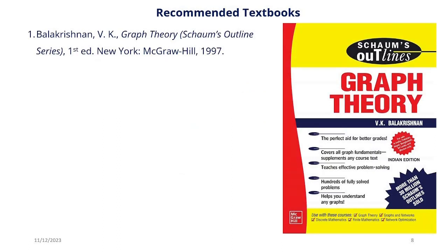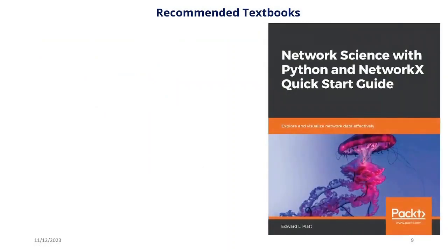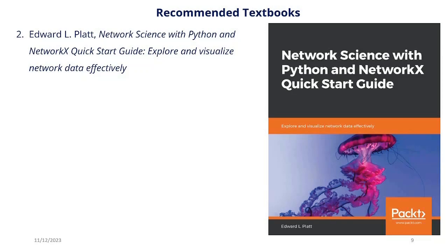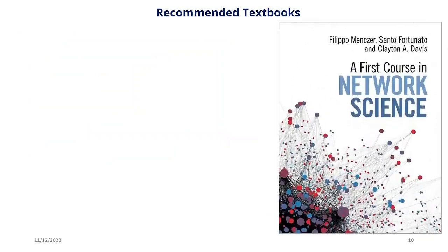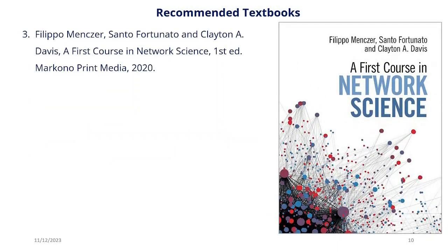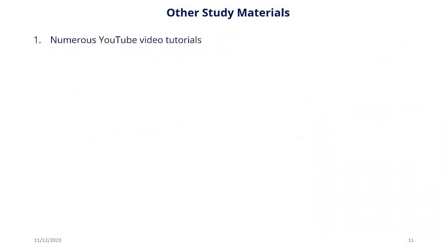Recommended textbooks. For graph theory: Graph Theory from Schaum's Outline Series by Balakrishnan VK — the ISBN and a link to the Amazon bookshop are provided. For the programming side using Python and NetworkX: Network Science with Python and NetworkX by Edward L. Platt, and A First Course in Network Science by Philip Omenza — both available on Amazon. Other study materials include YouTube video tutorials like this one and numerous online tutorials.